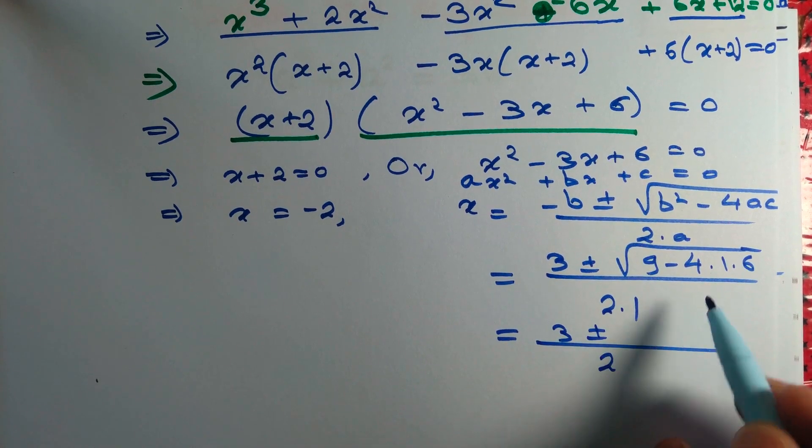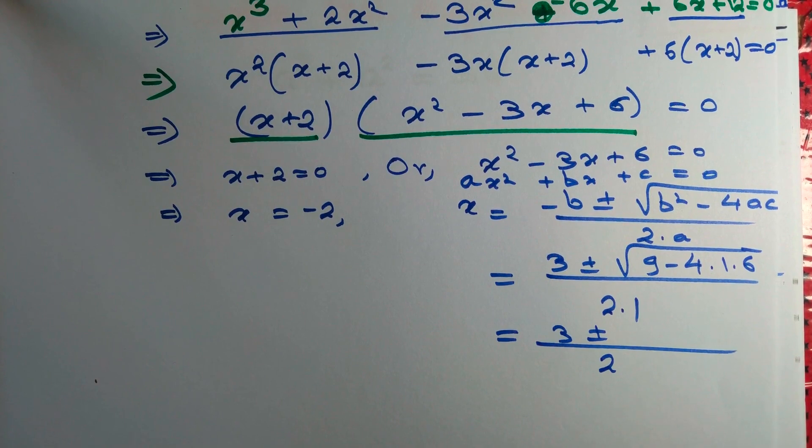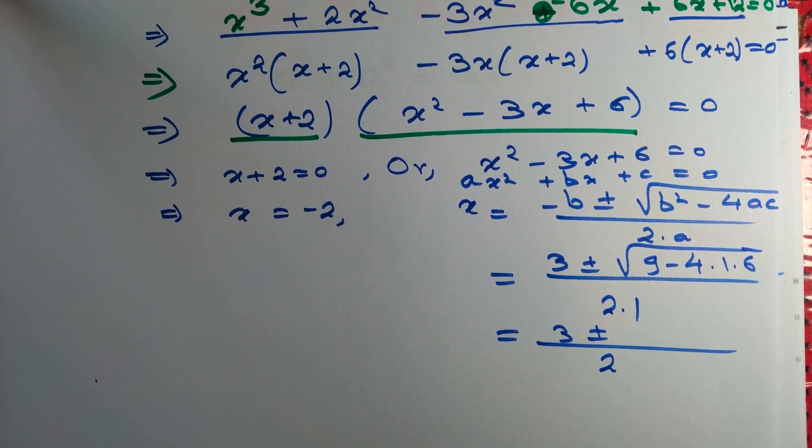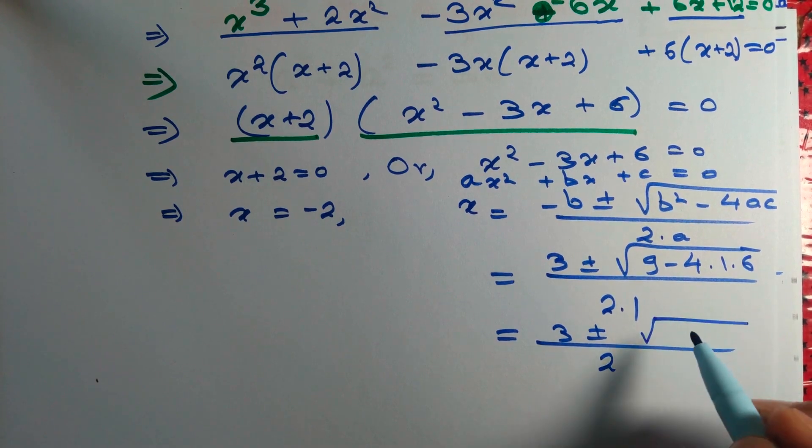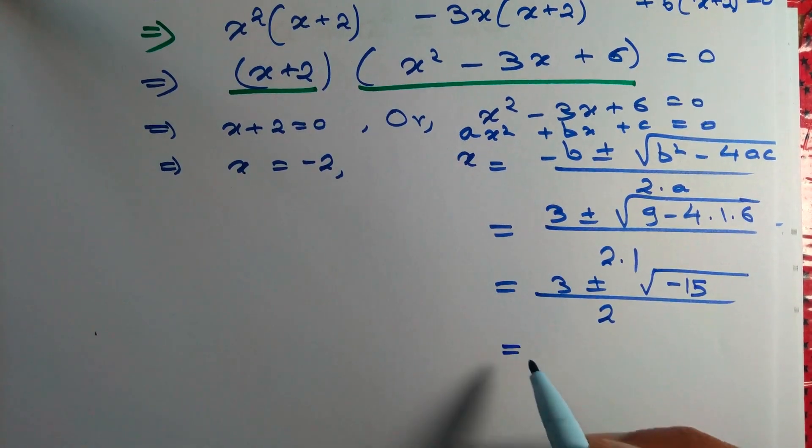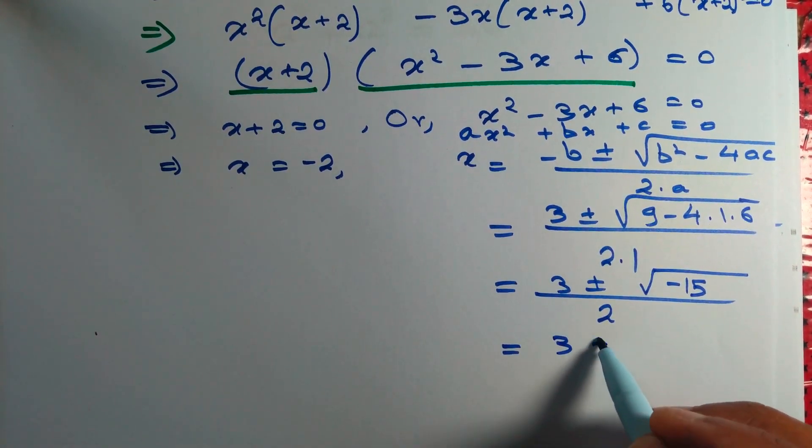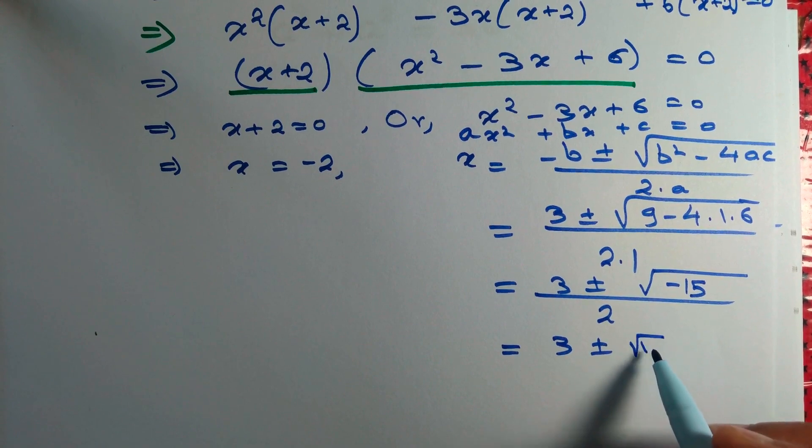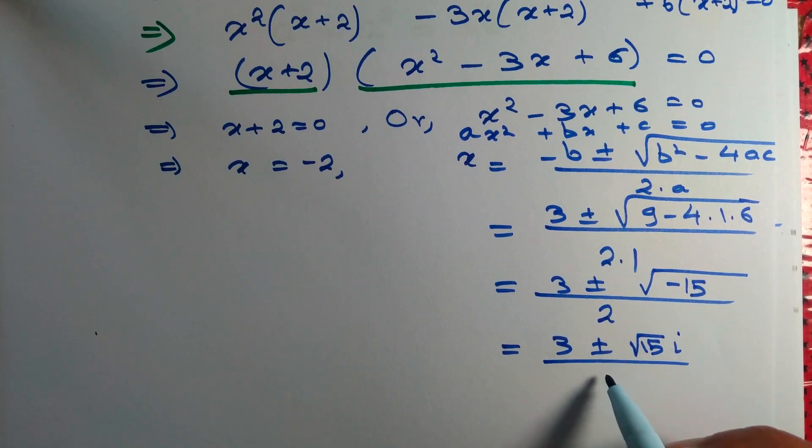That's equal to 3 plus minus 9 minus 24. 9 minus 24 is minus 15. So 3 plus minus root minus 15 by 2. Of course, we can write it as 3 plus minus root 15i by 2.